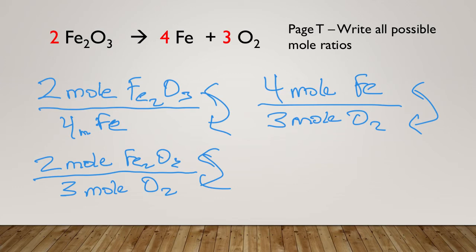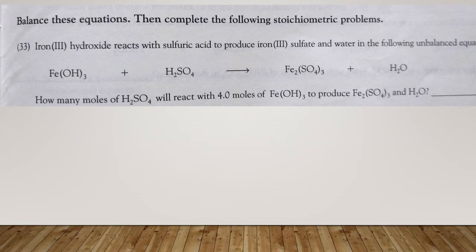That section at the top of page T shouldn't be too hard. After you do it, compare it to the score key right away and don't move on until you've figured it out. Let's do problem 33 together. The directions say to balance the equation and then complete the following stoichiometric problem. Iron(III) oxide — the Roman numeral III tells us iron has an oxidation number of positive three — reacts with sulfuric acid. Hydroxide is OH, which is a polyatomic ion that stays together, with a subscript of three.